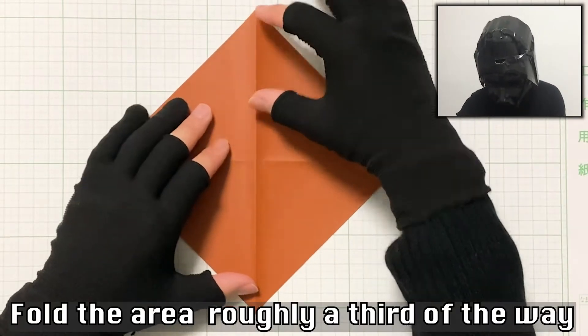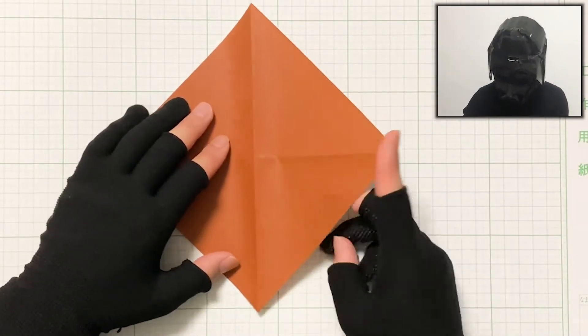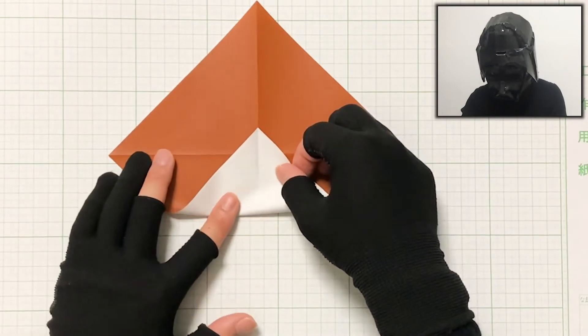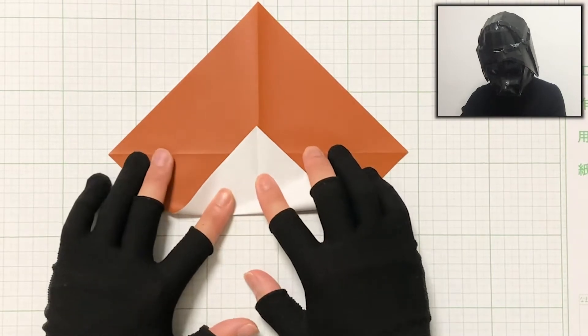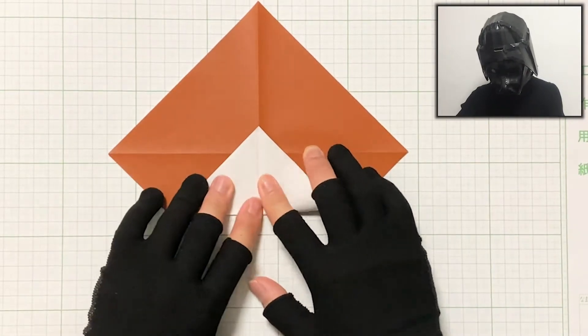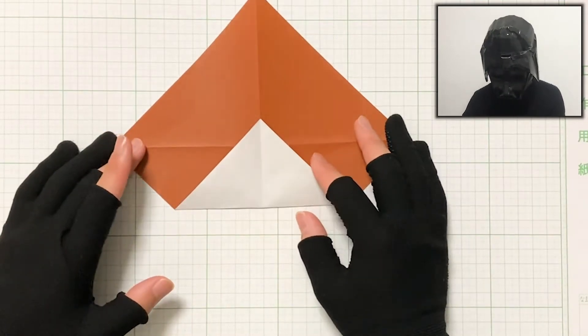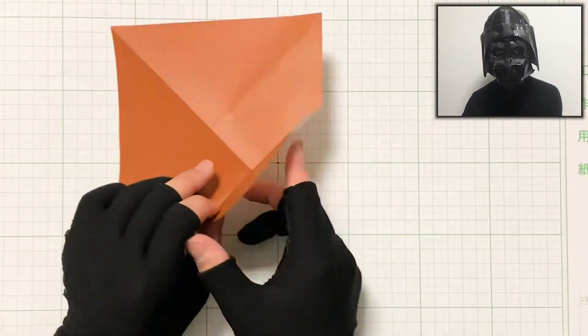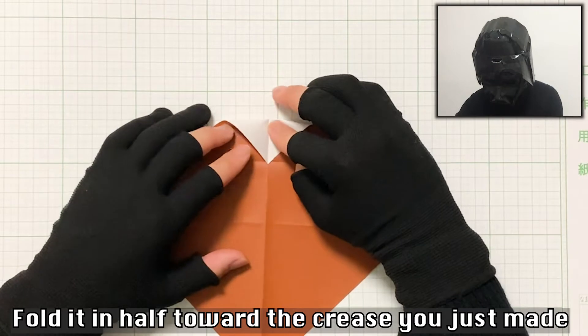Next, hold the area roughly a third of the way. Then, fold it in half towards the crease you just made.